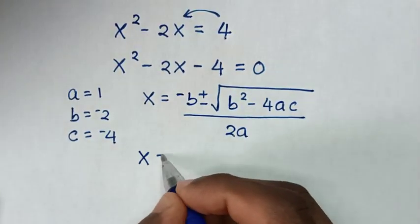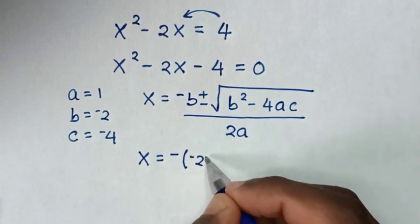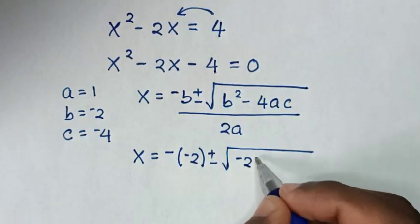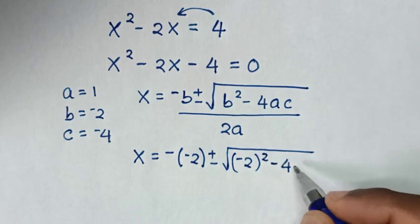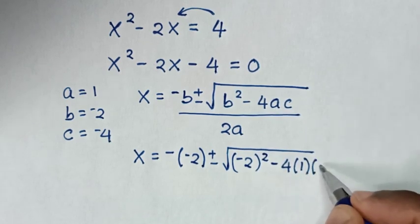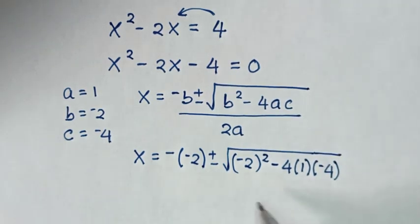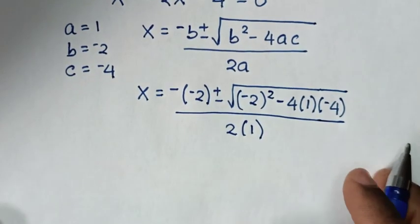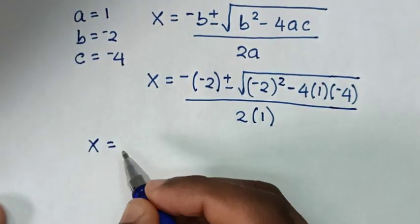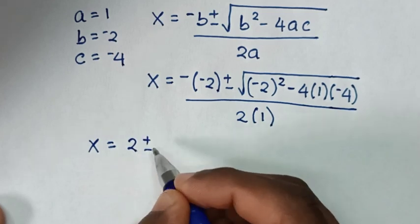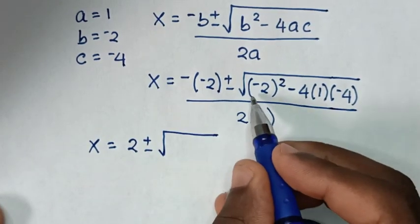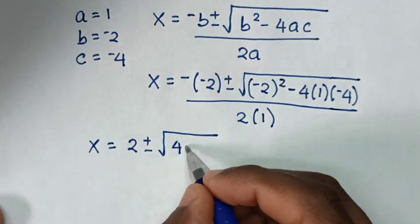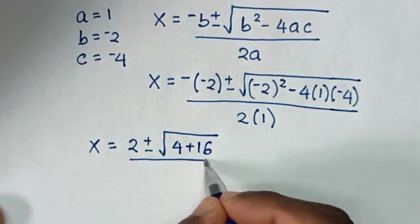Then x will be equal to negative of negative 2, plus or minus square root of negative 2 bracket squared, then minus 4 times a which is 1, times c which is negative 4. Negative 4 times 1 times negative 4 is positive 16. Then over 2 times a which is 1, so over 2.